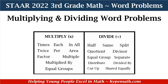So let's talk about some of the words that may indicate you need to multiply or divide when you are reading word problems. First, let's start with multiplication. You may see: times, each, all, twice, per, area, factor, multiply, multiple, multiplied by, or equal groups.